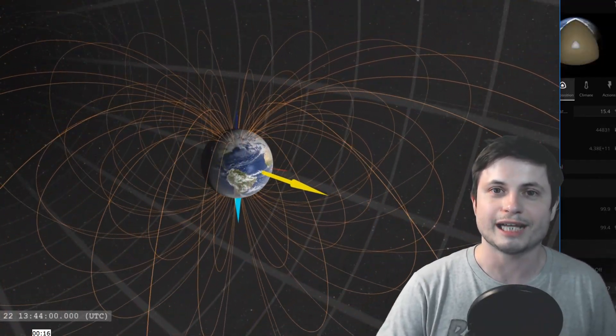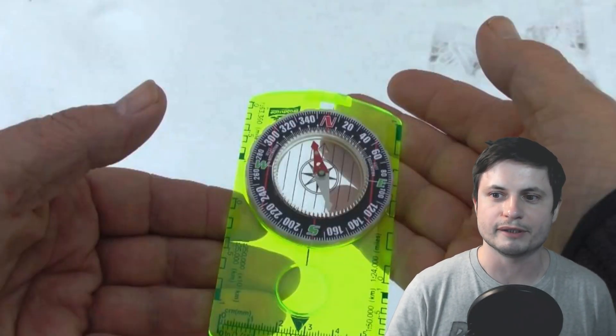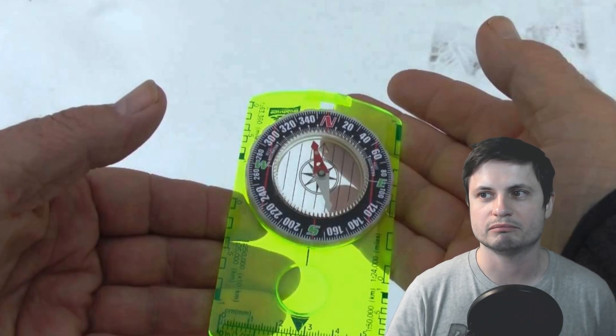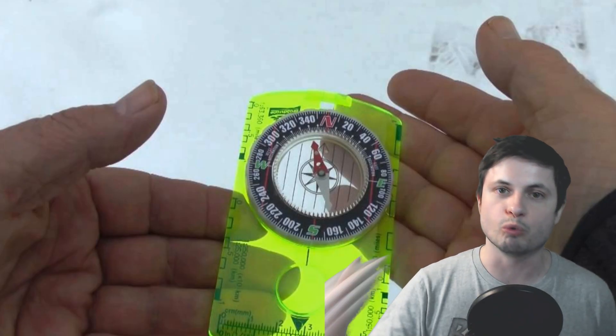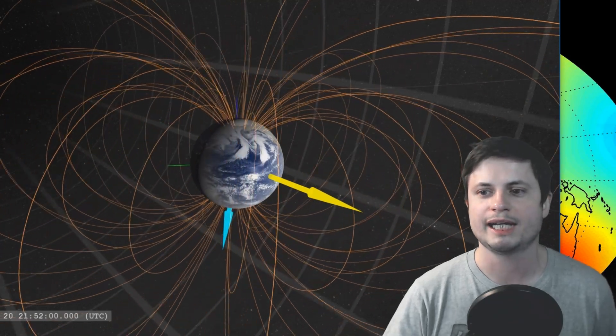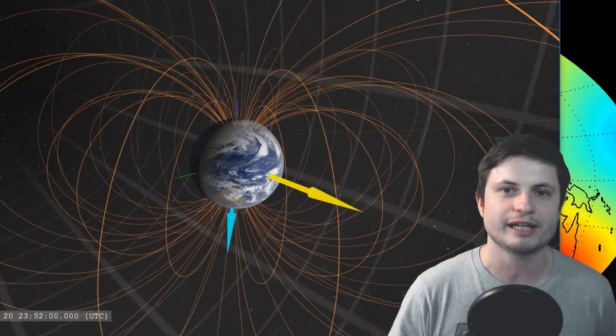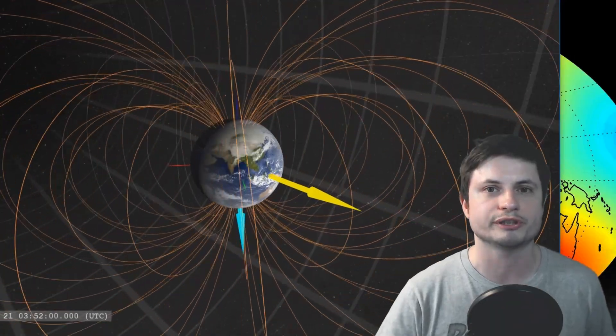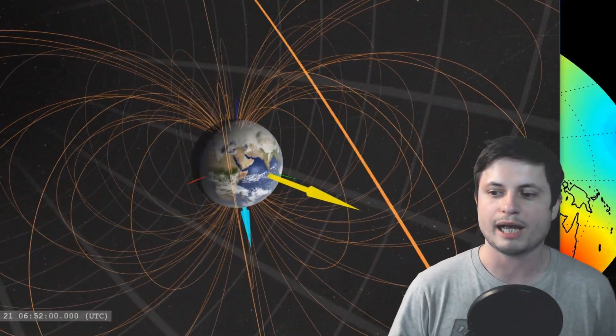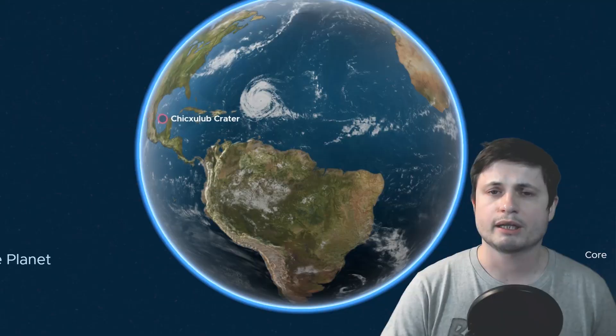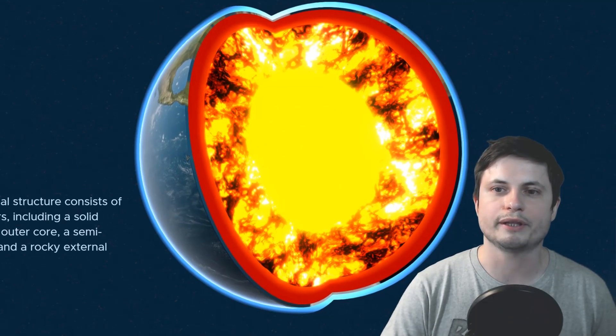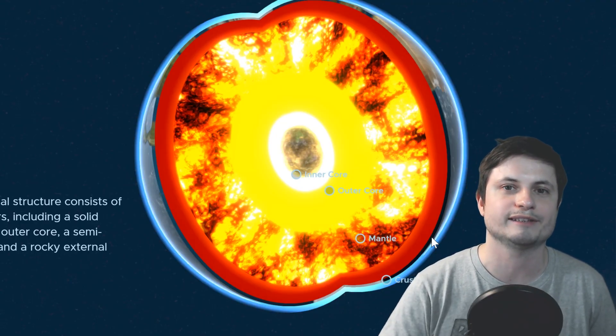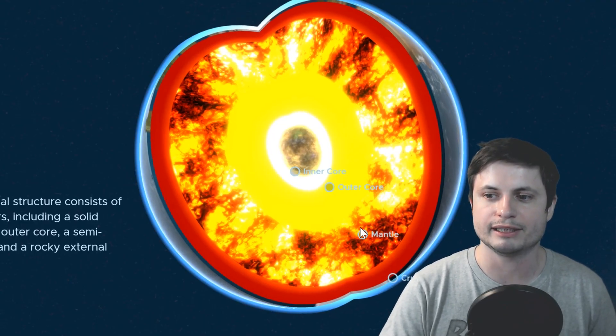The only thing that will happen is that the North and South will flip and so we'll need to design a bunch of new compasses. That's really it. That's the worst thing that will happen. There's nothing to worry about. It's not going to cause any major disasters, and I guess the best part is that it will allow us to understand the inside of our planet much better because now we have something we can study and some really cool things we can discover about our planet by making a few assumptions and trying to test them using various scientific theories.